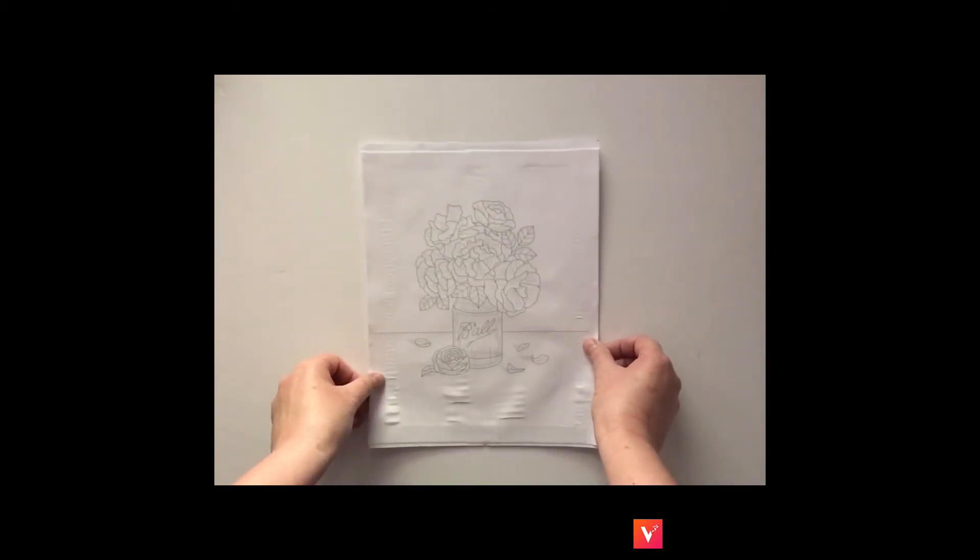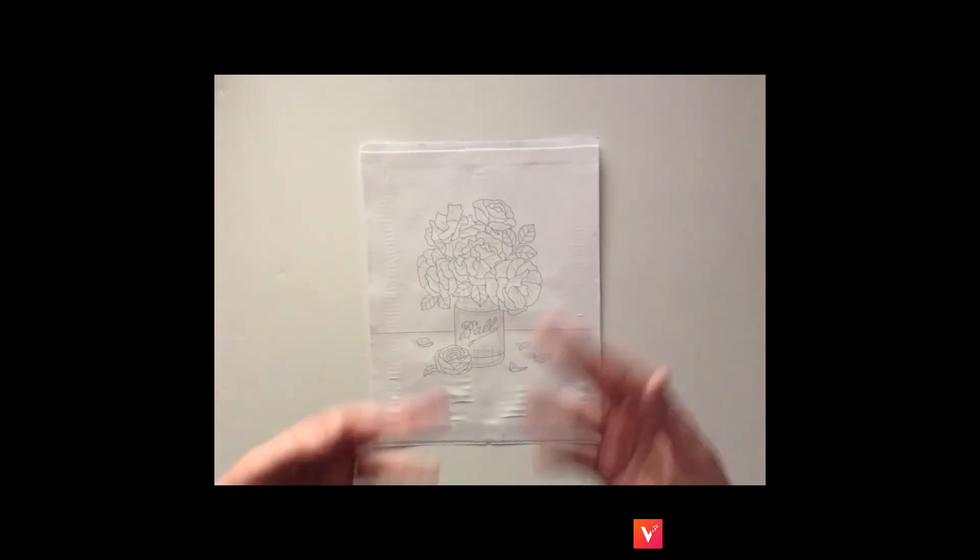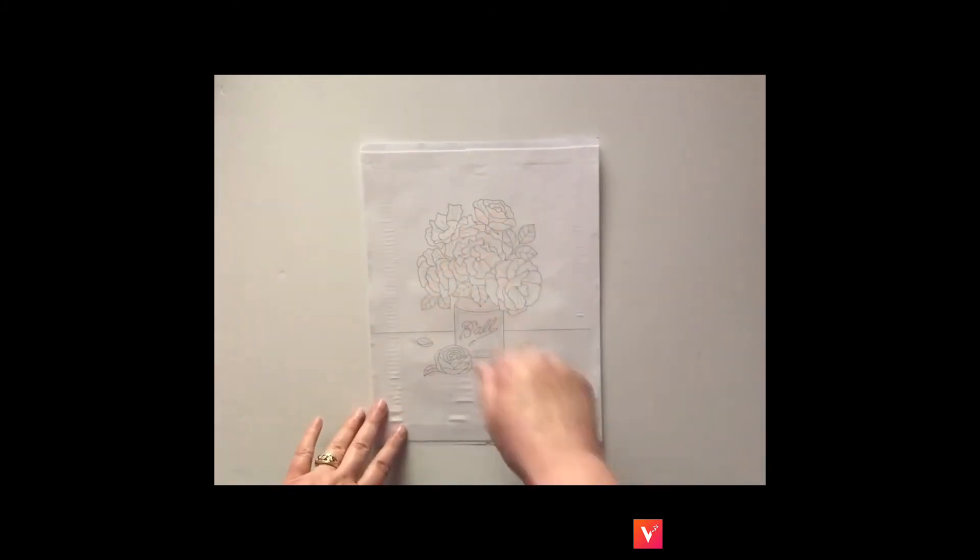All right. So here we are with the printed fabric. It's still on the paper. You can see that as it went through the printer towards the bottom, it kind of wrinkled the paper a little bit, but that's okay. It doesn't really matter. First of all, it's not even on the part that's going to be stitched. And once I take it off, I can iron those out later.